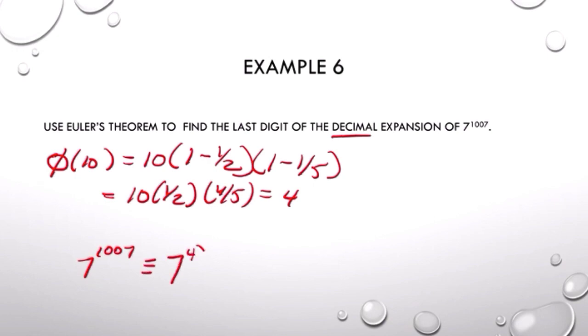So 7 to the 1007, we want to write as 7 to the 4th to some power. If you divide 4 into 1007, it goes in 251 times with a remainder of 3. And the 7 to the 4th is 1 by Euler's theorem. So we're just left with a 7 cubed.